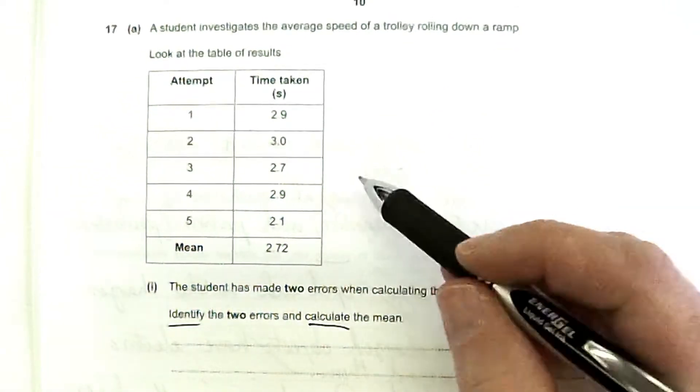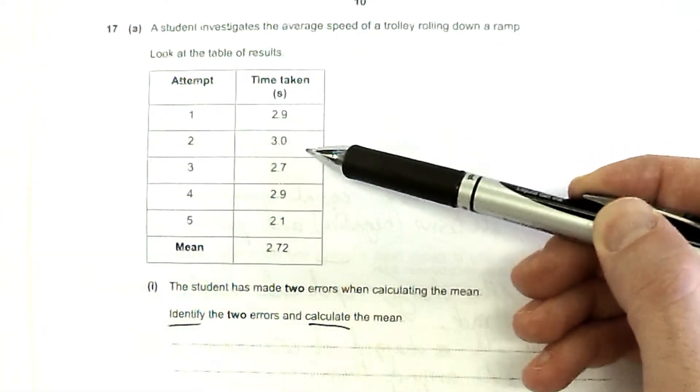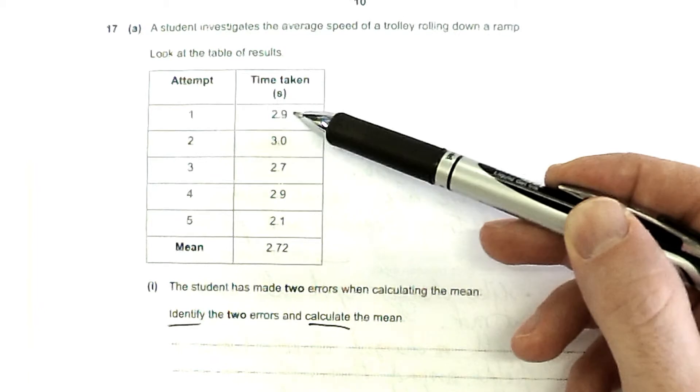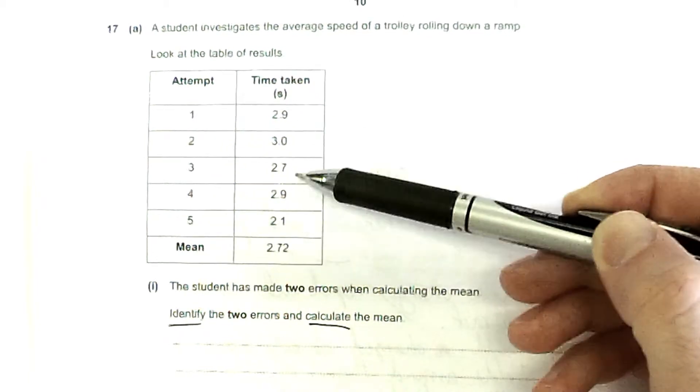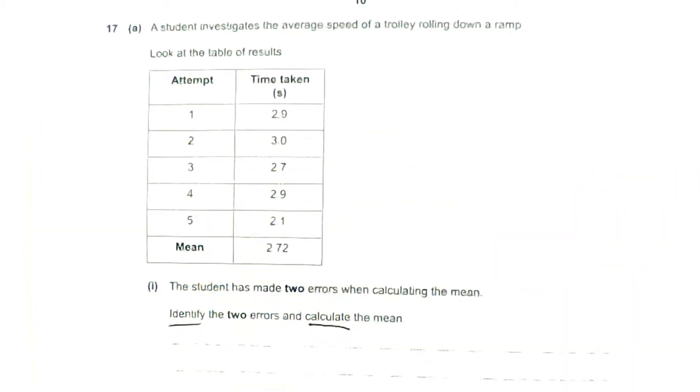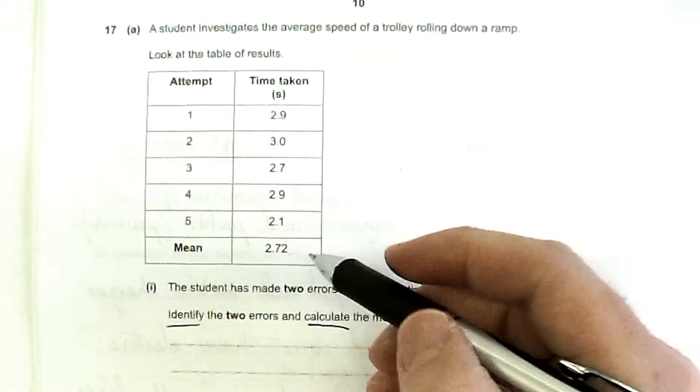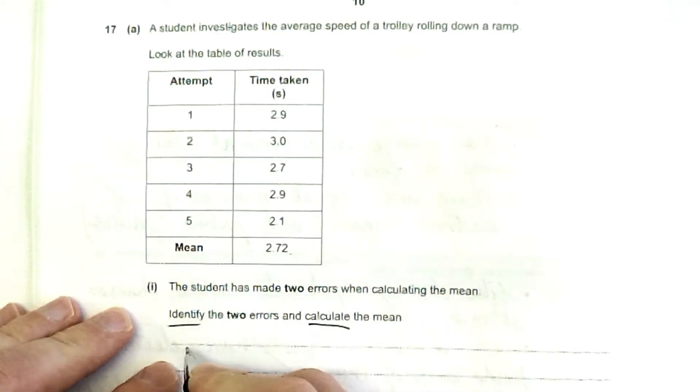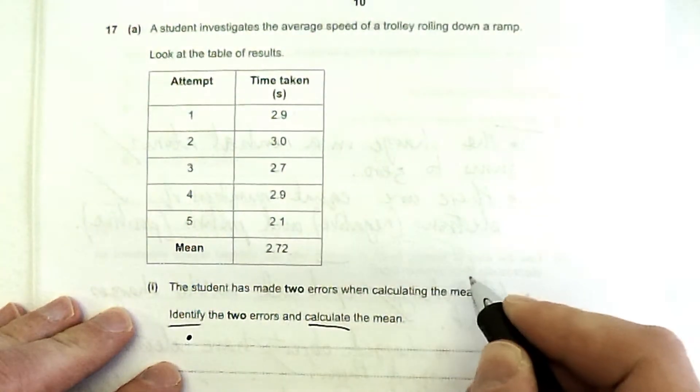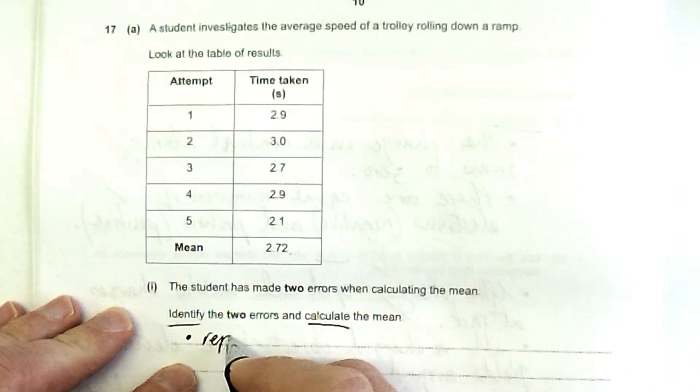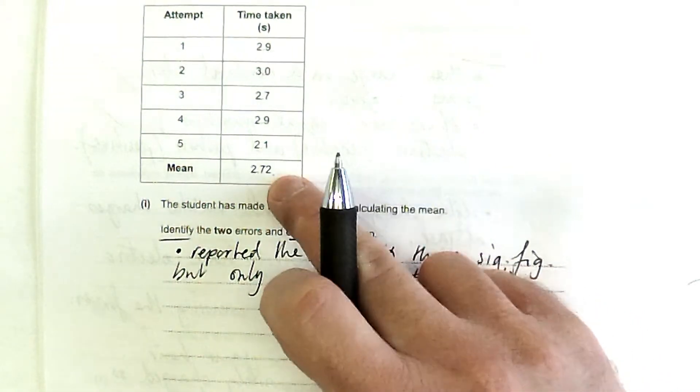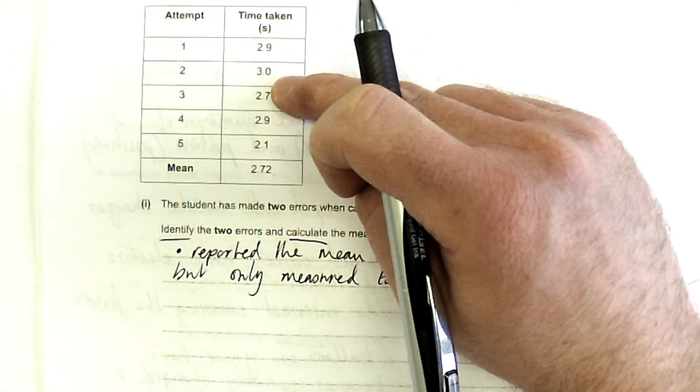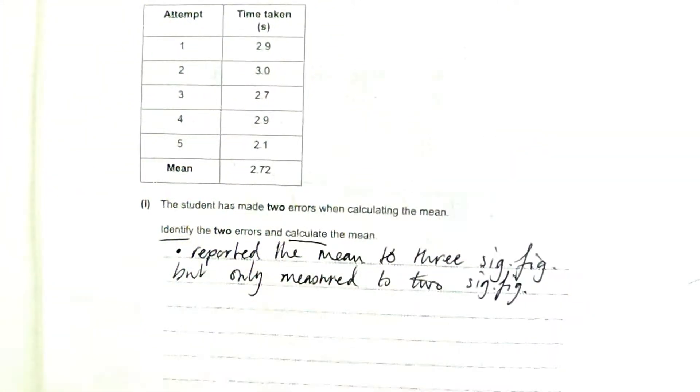All right, so what are the errors when they're calculating the mean? Let's have a little look down here. Doesn't it seem a bit silly that they've calculated to three significant figures but they've measured to only two significant figures? So they've reported the mean to three significant figures or you could have written two decimal places but they've only measured to two significant figures. Okay, that's not an accurate way to do things really. That's not really the right thing. The number of significant figures should be the same as the raw data. So that's an important thing.